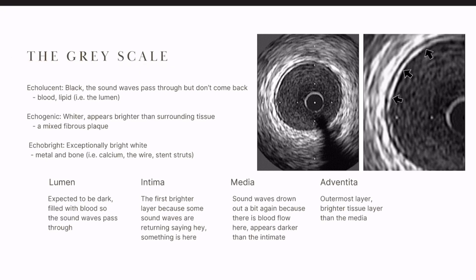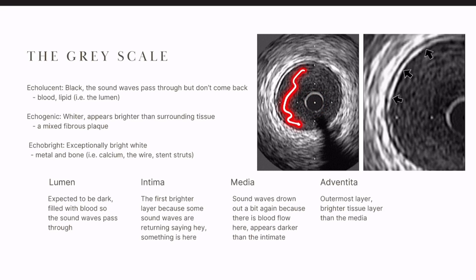The gray scale we keep talking about: echolucent, echogenic, echobright. Echolucent is equivalent to the color black. Looking at this image, the echolucent areas include the center, a thin hairline here — which is better seen here — and some black out here which we don't really worry about. Black means the sound waves either don't come back at all or come back very slowly. That is what you get with blood and lipid, which is why the lumen appears darker because there's blood in there.